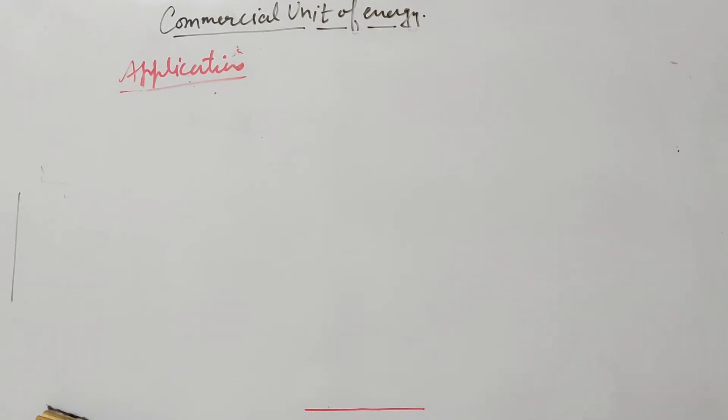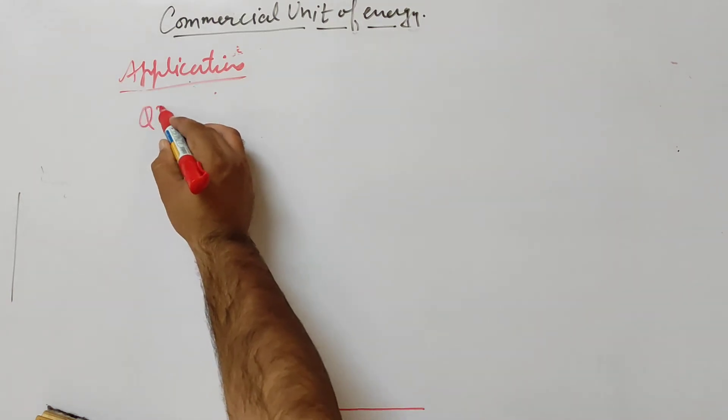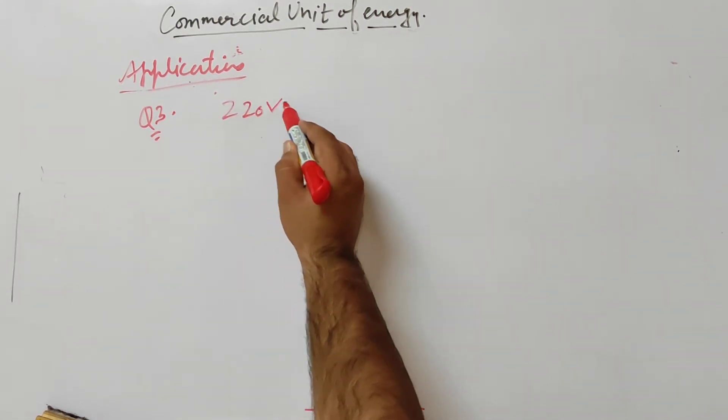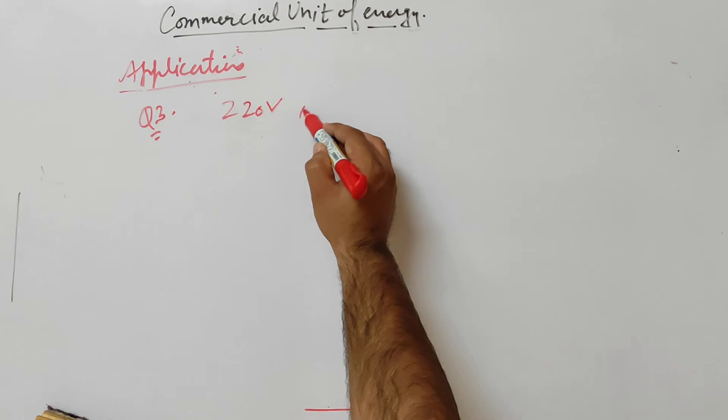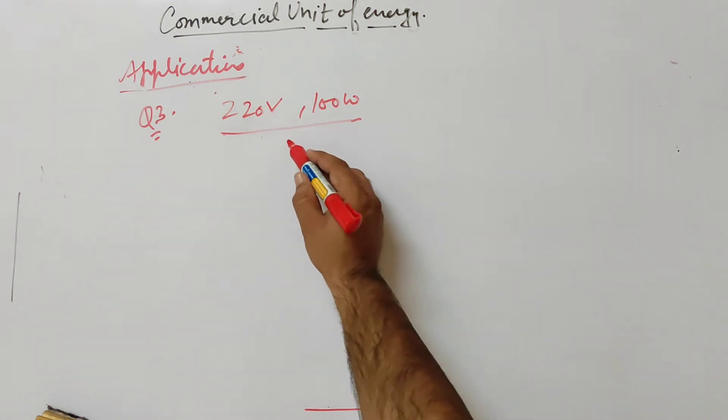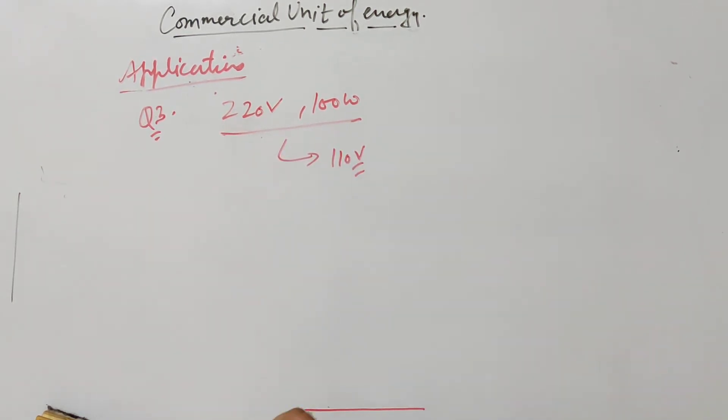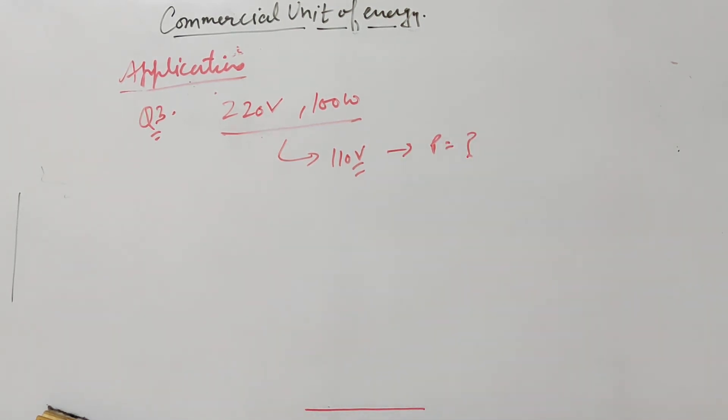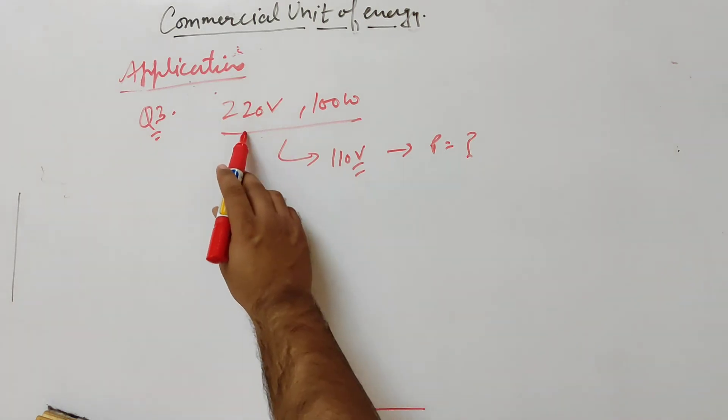Now we have a numerical on heating effect. In NCERT exercise question number 3: an electric bulb rated 220 volts and 100 watts, when operated on 110 voltage, how will the power change? 100 watts is the maximum power when voltage is 220 volts.